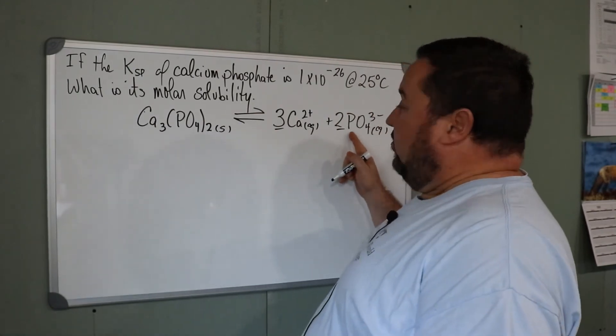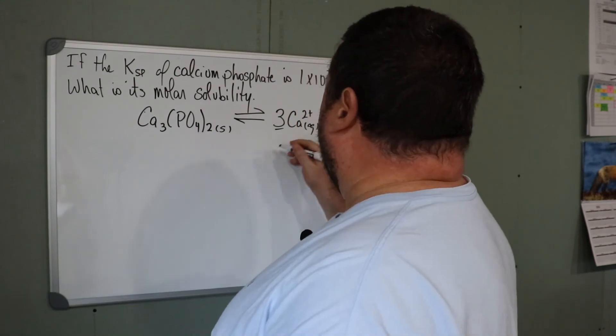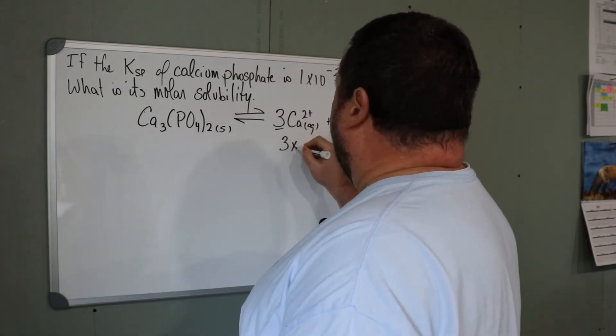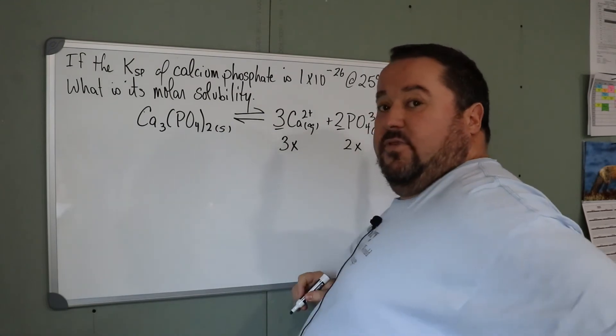In considering what happens when the calcium dissolves, just use your stoichiometric coefficients here. A small amount of this, X, dissolves. It will give me a concentration of 3X of the calcium and 2X for the phosphate.